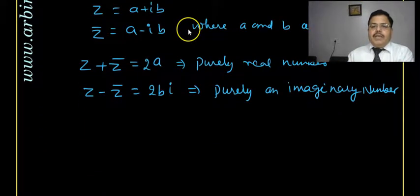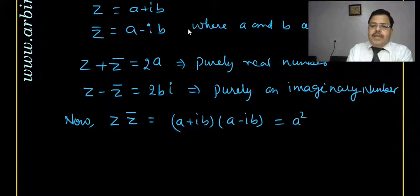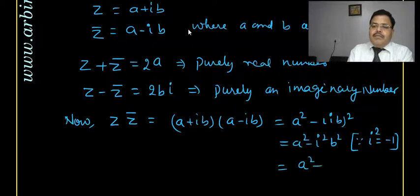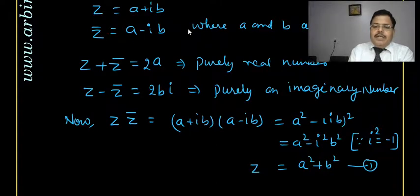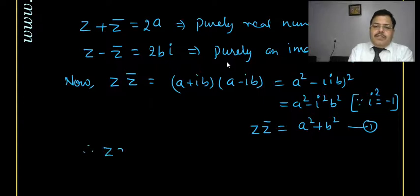Also, z multiplied by z-conjugate: that is (a plus iota b)(a minus iota b), which equals a squared minus (iota b) squared. Since iota squared is minus 1, that gives a squared plus b squared. So z times z-conjugate is a real number, specifically a squared plus b squared.